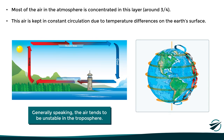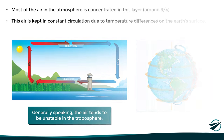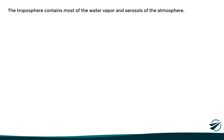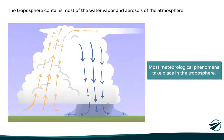Another important thing with respect to the troposphere is that it also contains most of the water vapor and aerosols of the atmosphere. This, combined with the fact that the air here is unstable and constantly circulating, implies that most meteorological phenomena such as thunderstorms and precipitation take place in this layer.